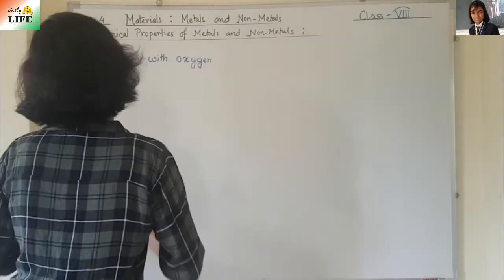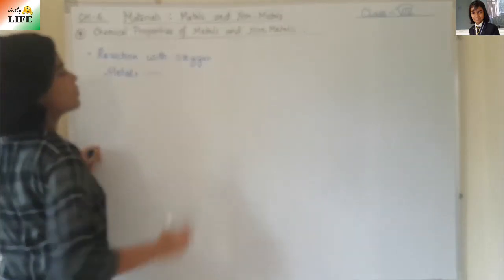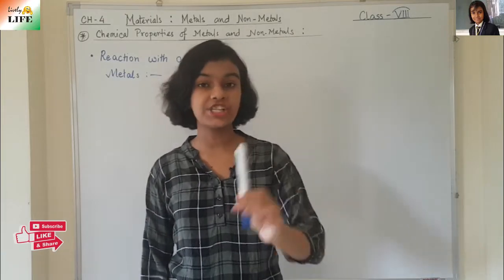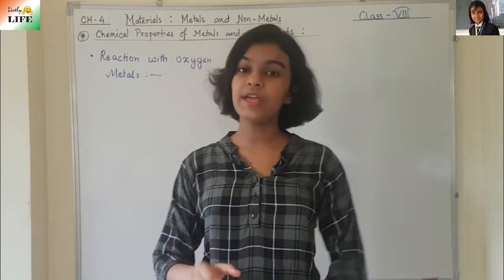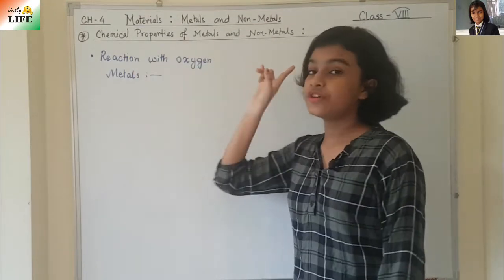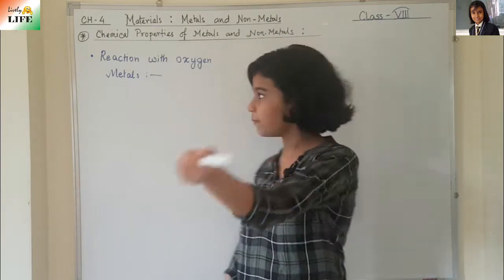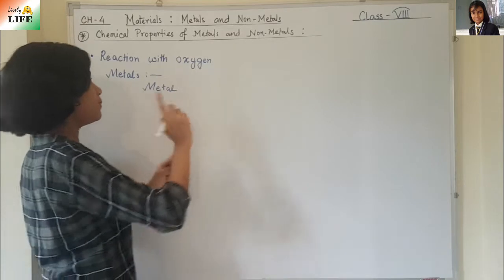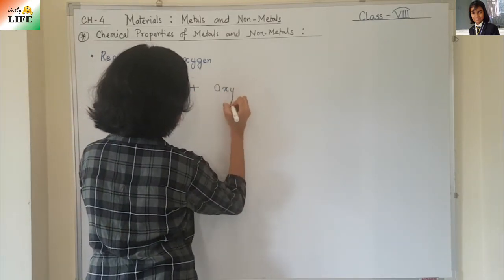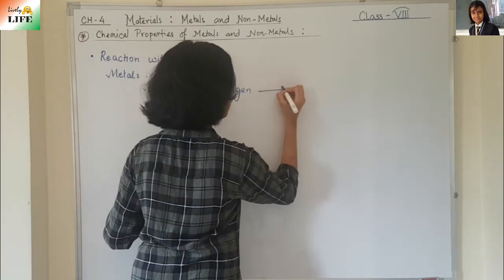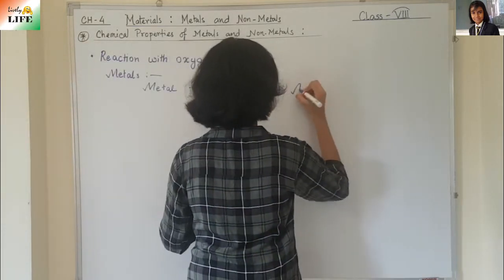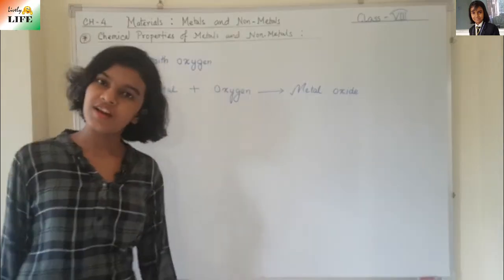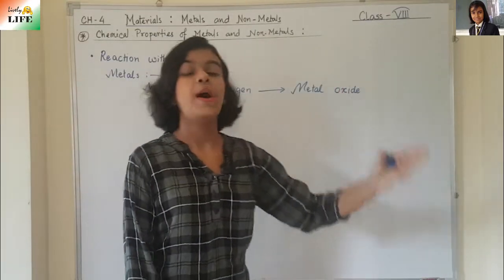First point is reaction with oxygen — how do metals and non-metals react with oxygen? First, we are going to discuss about metals. Metals are very reactive; metals react with almost everything. Example: sodium and potassium are the most reactive metals. The metals react with oxygen to form certain oxides — the oxide of that same metal. Metal + oxygen gives metal oxide.